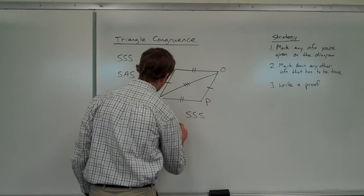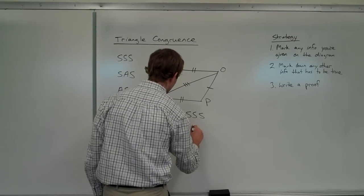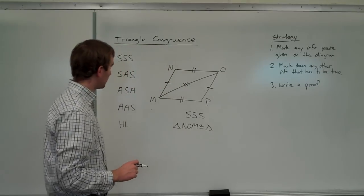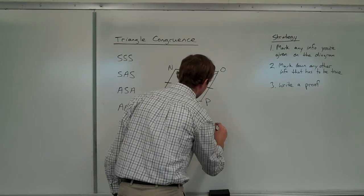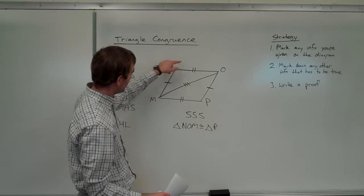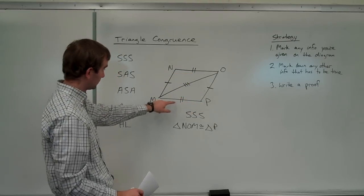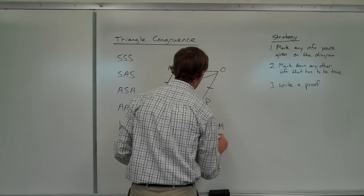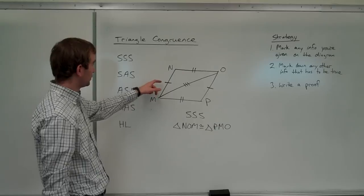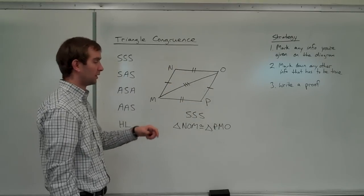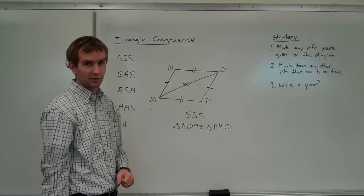Here's what our congruence statement looks like: triangle NOM is congruent to... order is important. N on this triangle corresponds with P on this triangle. From N we went to O along the two-hash-mark side, so from P we go to M along that same corresponding side. And then O is the only one left. Writing the proof would be simple: write down the two given sides, then MO is congruent to MO by the reflexive property, and then those two triangles are congruent by side, side, side.